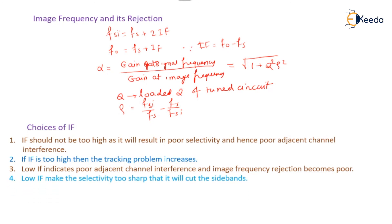If low IF, then the selectivity becomes too sharp and it may cut the sidebands. For low IF frequency, frequency stability of local oscillator must be very high.